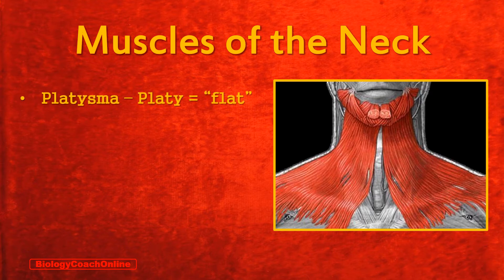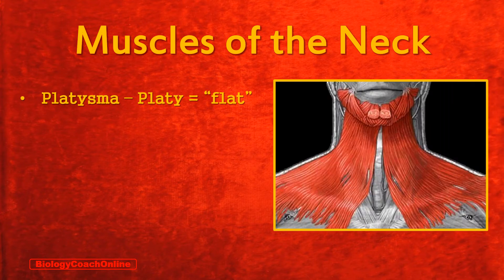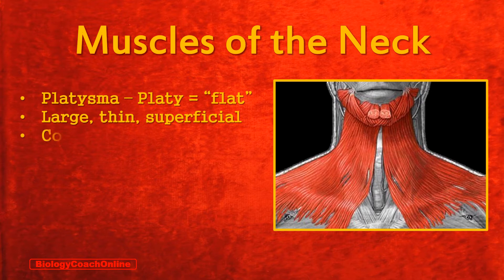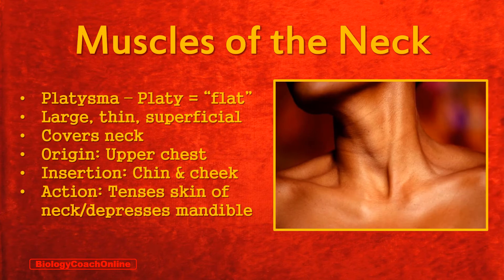The root word here is 'platy,' which means flat — think of the platypus with its flat tail. The platysma is a large, relatively thin, superficial muscle that covers the neck. It is paired, and here you see the right and left platysma muscles. This muscle has its origin on the upper chest, and it inserts on the chin and the cheek. Its action is to maintain tension on the skin of the neck and further depress the mandible.